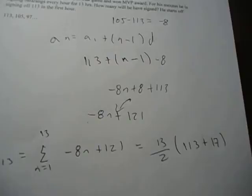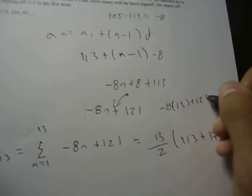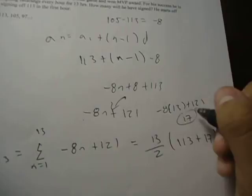And how I got 17 was, I plugged in 13 into here. So it would be negative 8 times 13 plus 121. That gives me 17. And that's our a_n value, which would later be plugged into here.